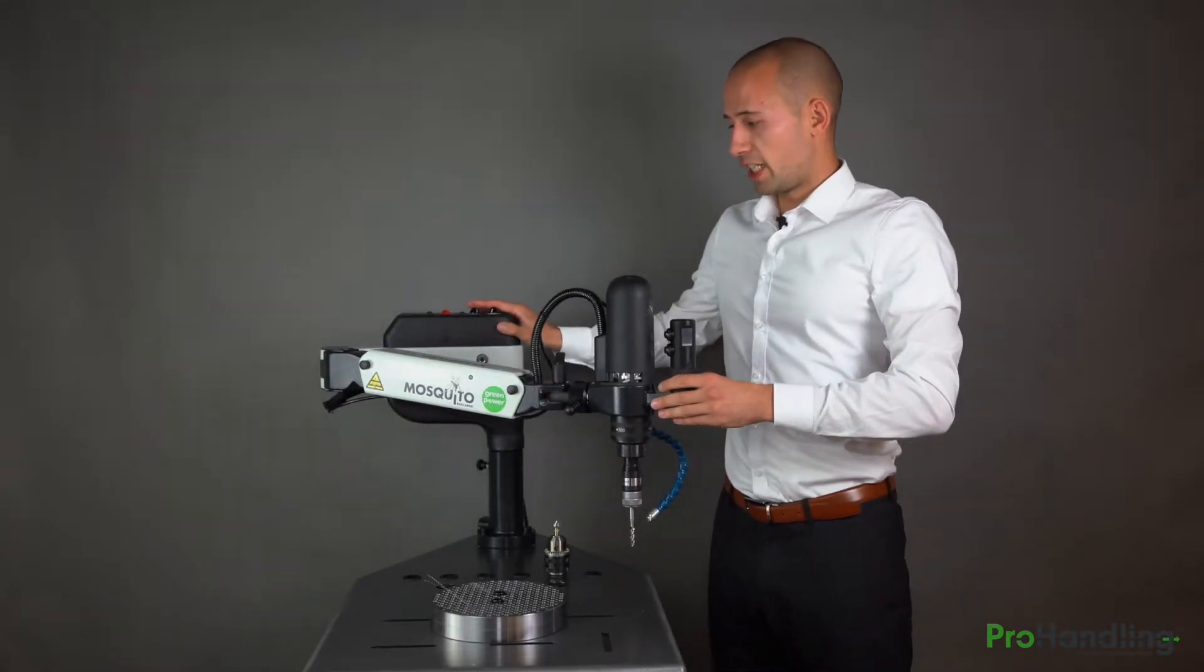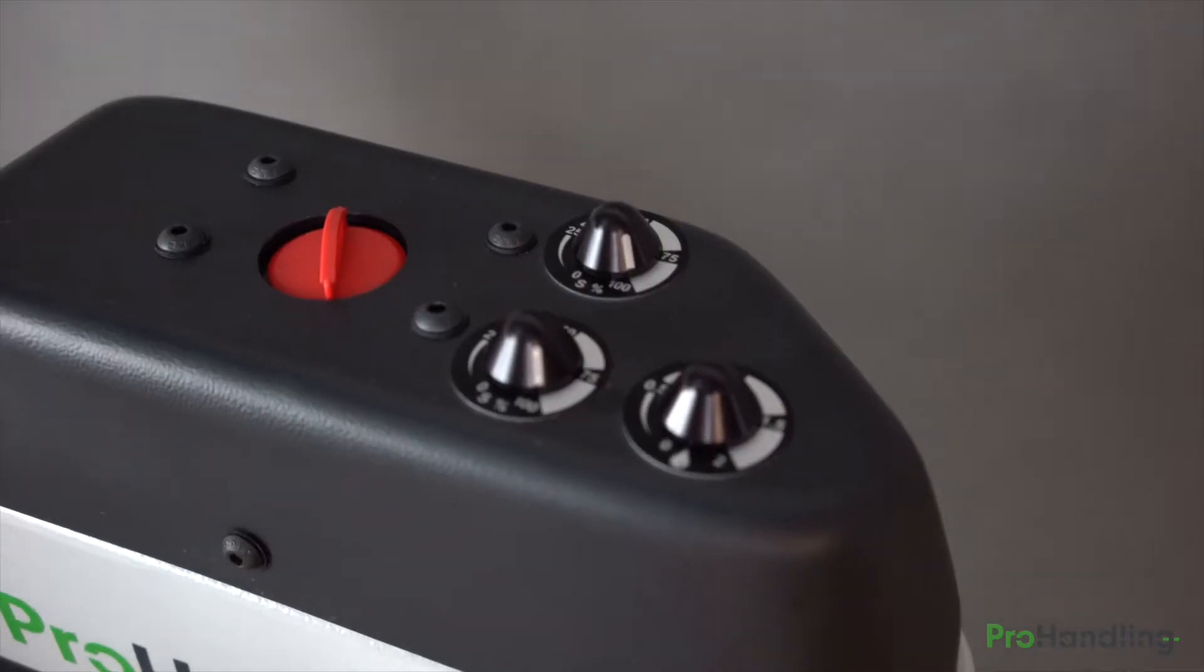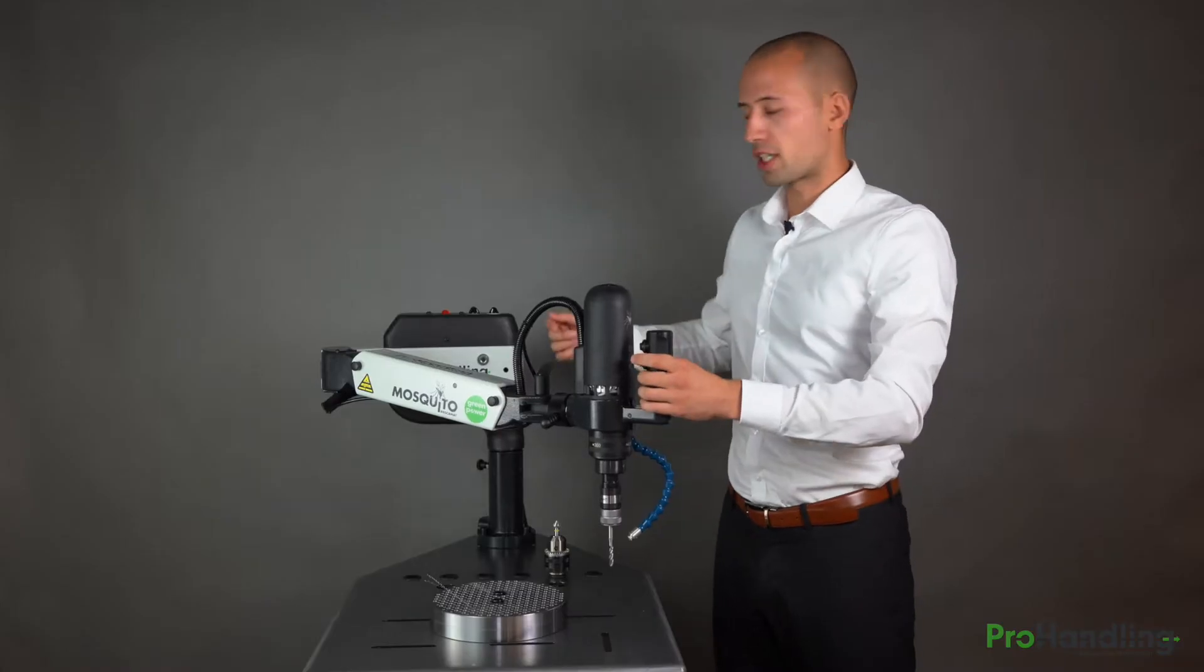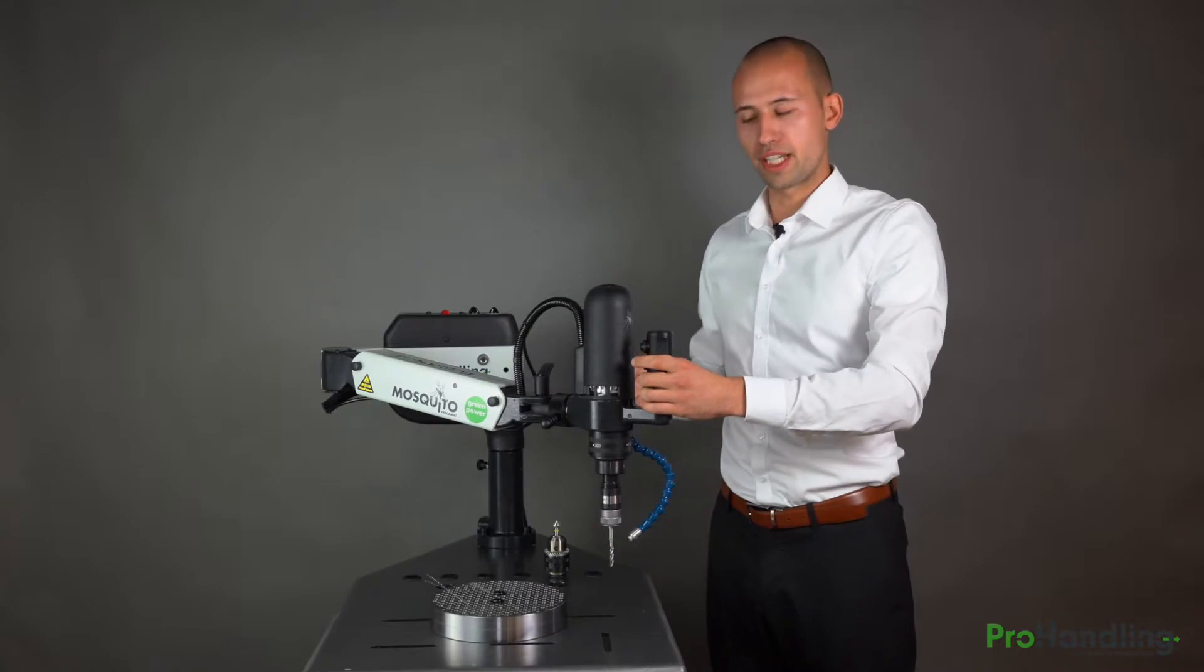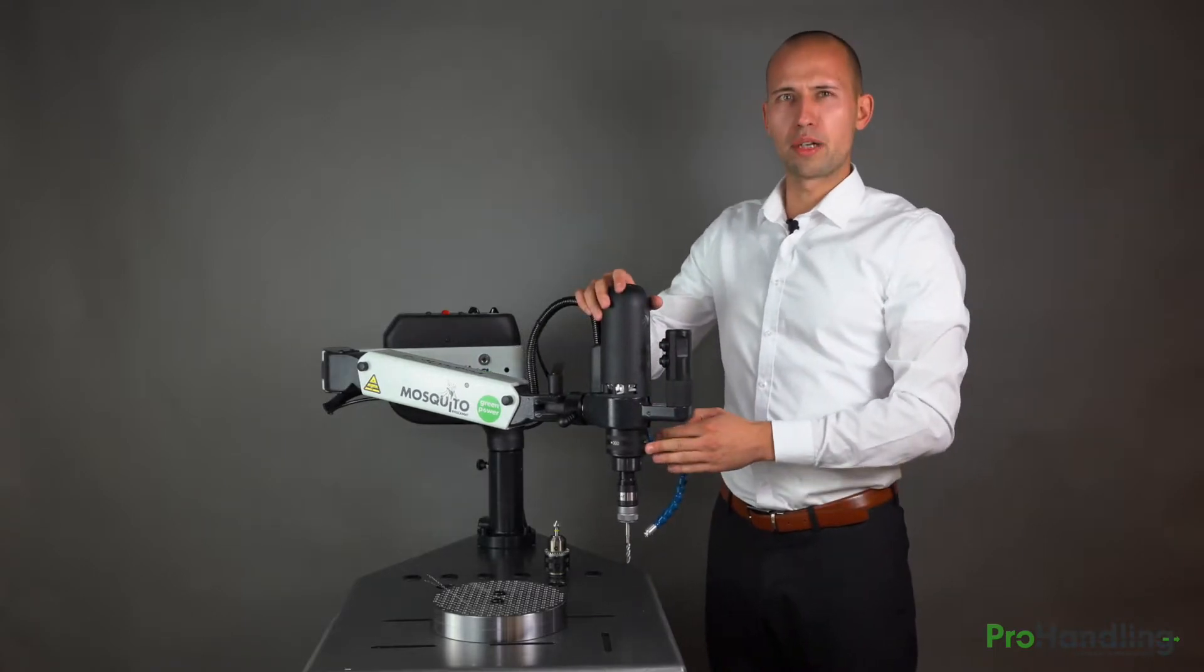The speed adjustment is really easy. You have two knobs. One is for forward speed, one is for backward speed. You can adjust from 0 to 100% and the maximum RPM's are 600.